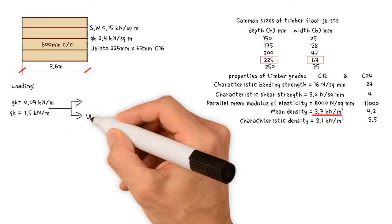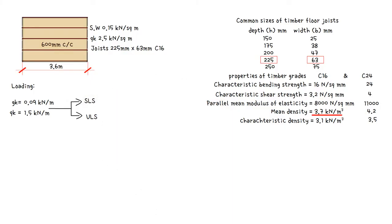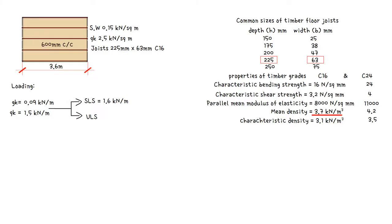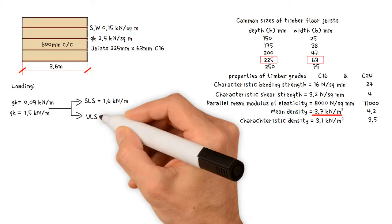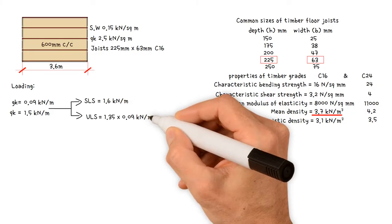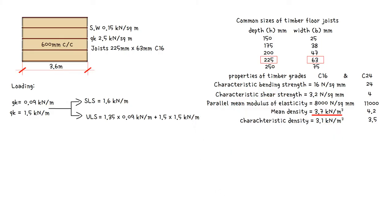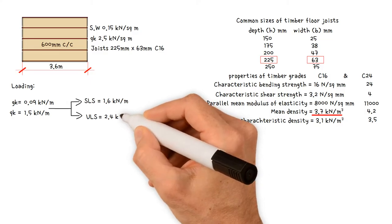We'll need both the ultimate limit state (ULS) and the serviceability limit state (SLS) to figure out the stresses and deflection. In the SLS, the uniformly distributed load equals total unfactored loads: dead load 0.09 kilonewtons per meter plus imposed load 1.5 kilonewtons per meter, giving 1.6 kilonewtons per meter. In the ULS, the uniformly distributed load equals total factored loads: dead load 1.35 × 0.09 kilonewtons per meter plus imposed load 1.5 × 1.5 kilonewtons per meter, resulting in 2.4 kilonewtons per meter.